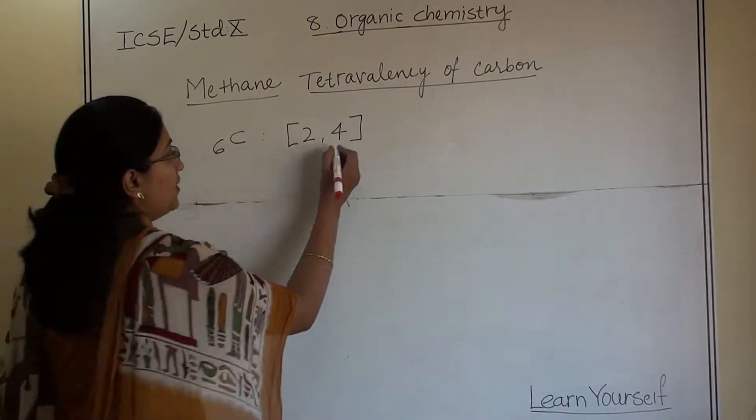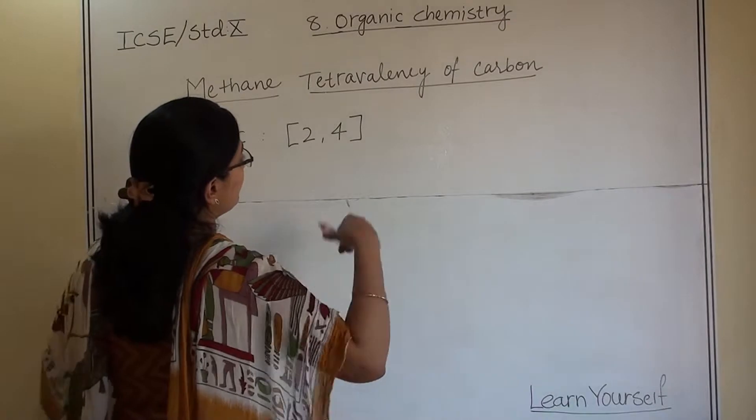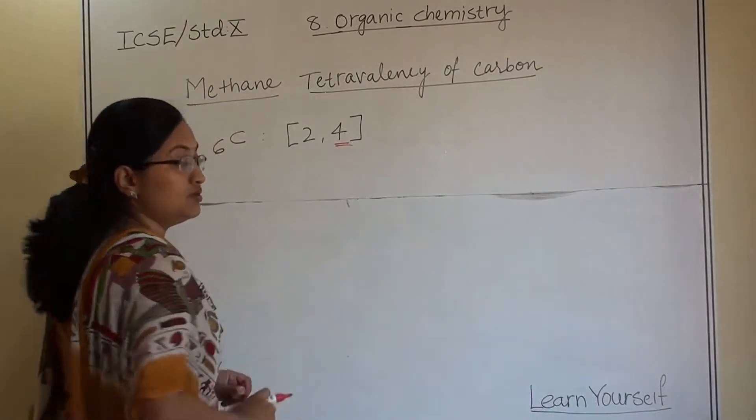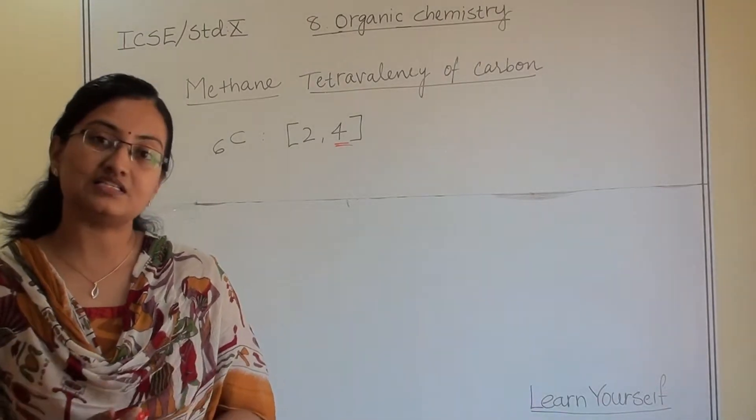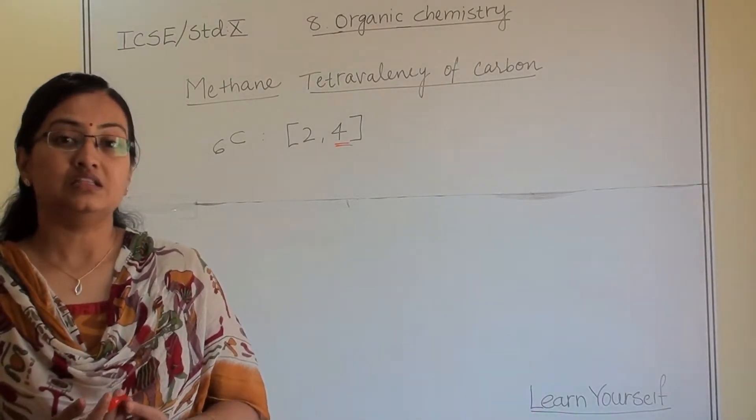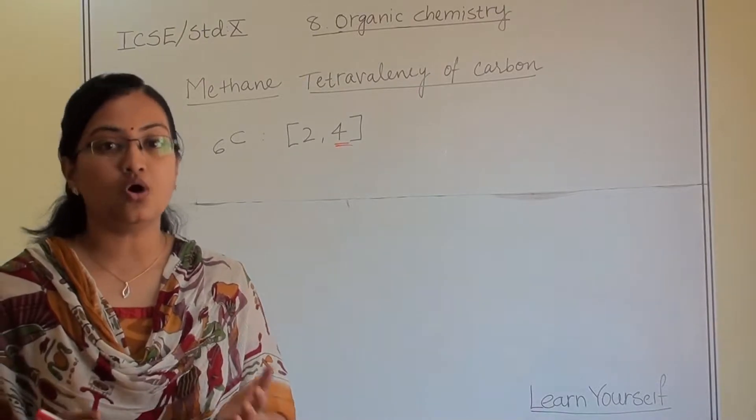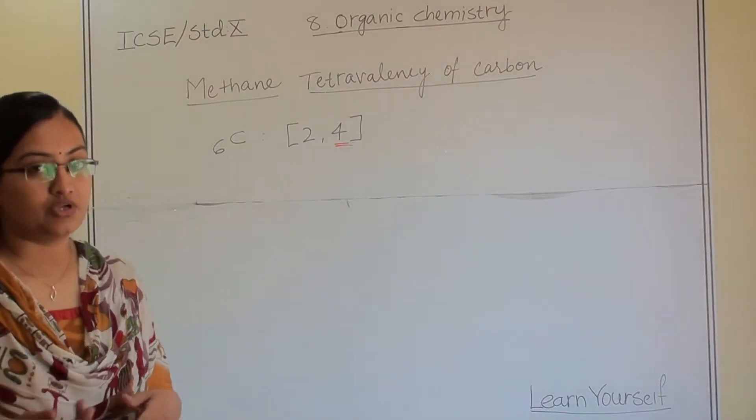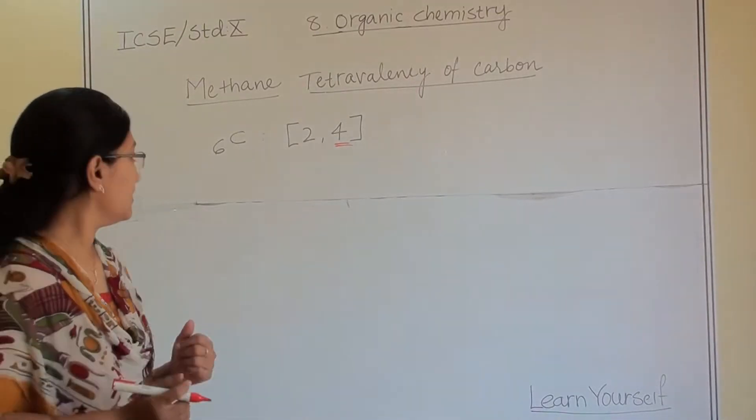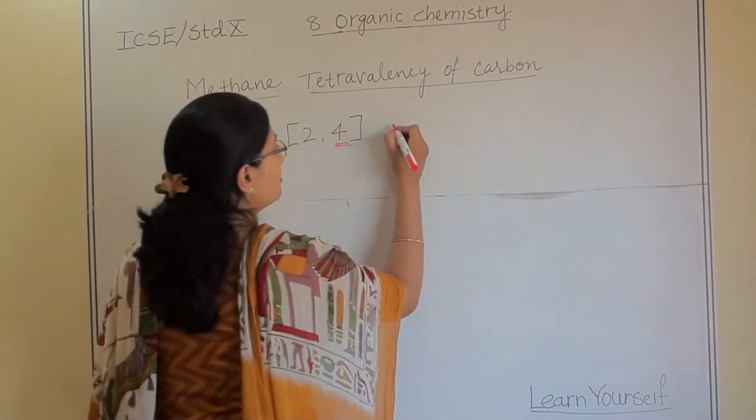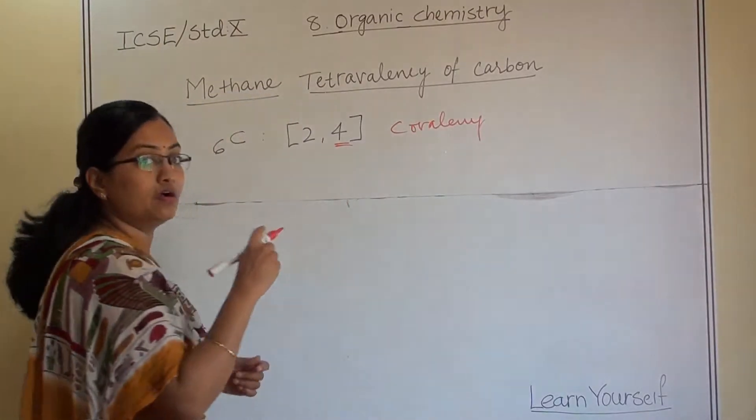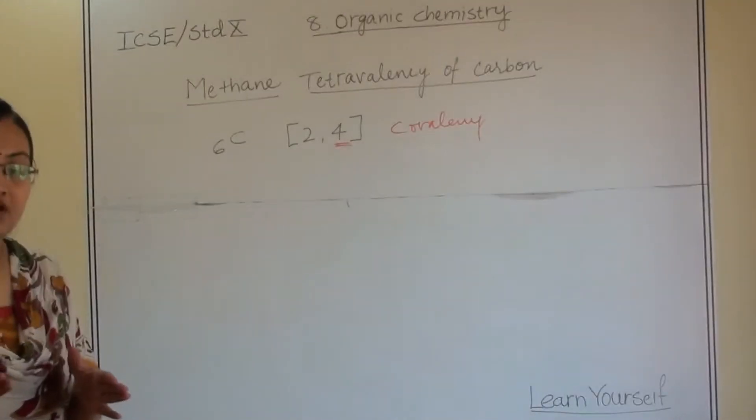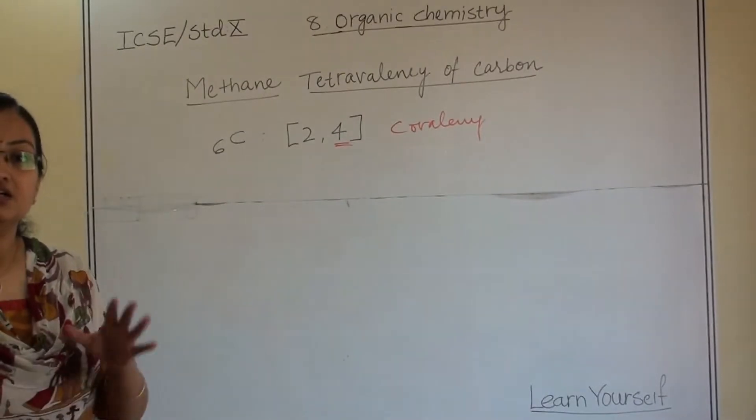So whenever it is 4 here, carbon will not go for electron transfer. What is the reason? Because it can neither donate nor accept electrons, it is in between. So it will go for covalency. It will make a covalent bond with any other atom and satisfy the stability of the L shell.